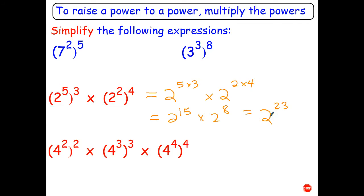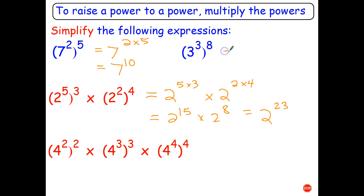Stop the video and have a go at the other three questions. To raise a power to a power, multiply powers — that's 7 to the power of 10. Next, 3 cubed to the power of 8: multiply powers and that's 3 to the power of 24.